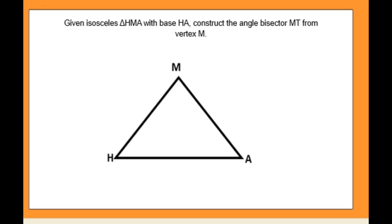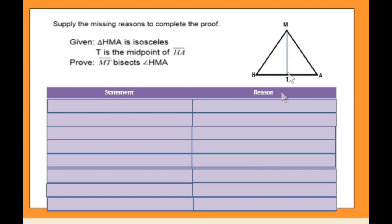Now for our first example: given isosceles triangle HMA with base HA, we need to construct an angle bisector MT from vertex M. We know that an angle bisector divides an angle into two equal parts, so we place line segment MT as our angle bisector. We need to supply the missing reasons to complete the proof. Given: triangle HMA is isosceles, T is the midpoint of line segment HA. We need to prove that line segment MT bisects angle HMA. We will use a two-column proof.